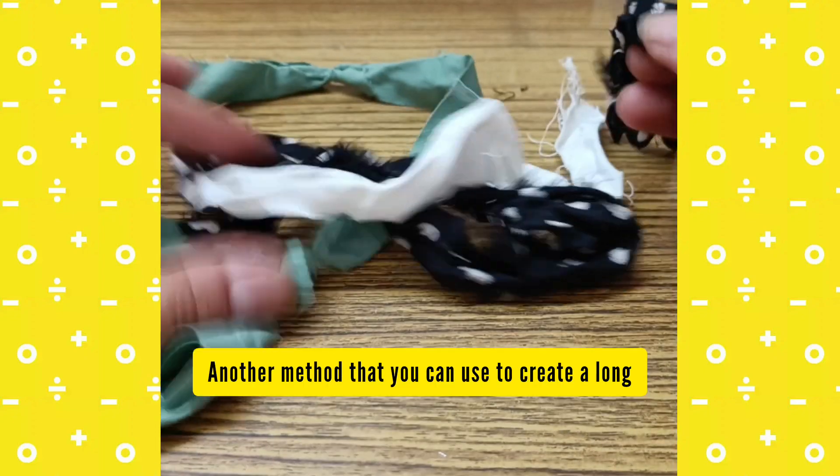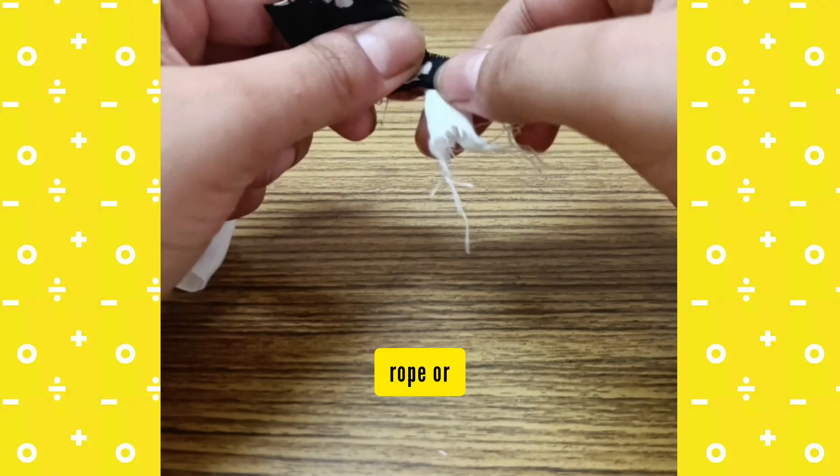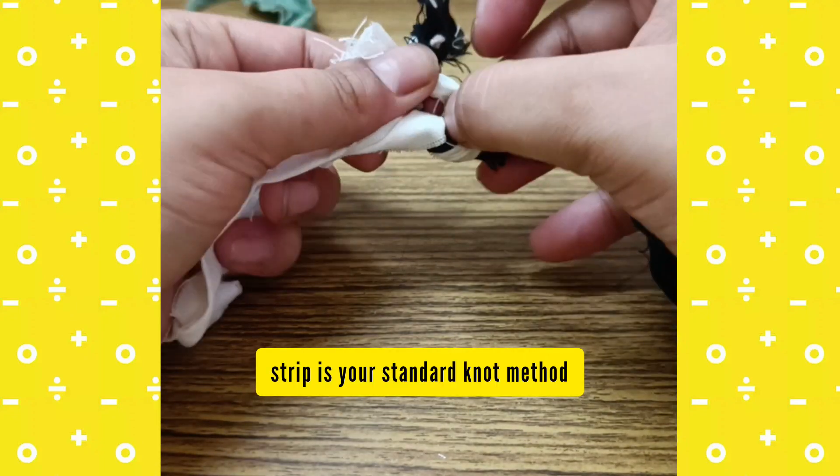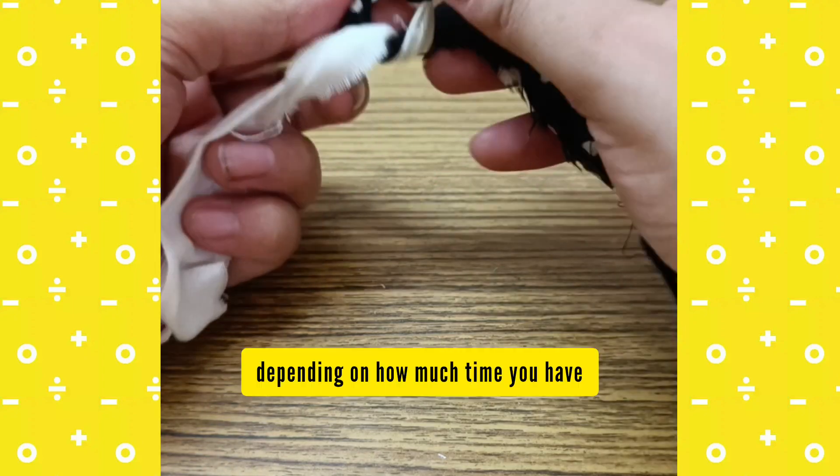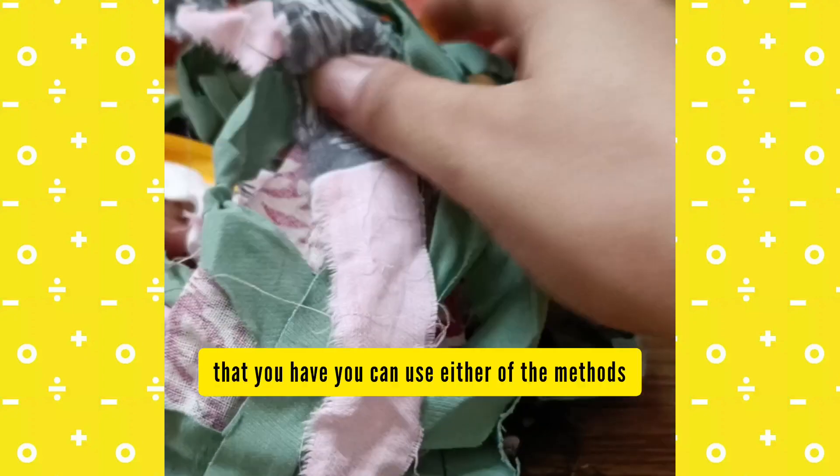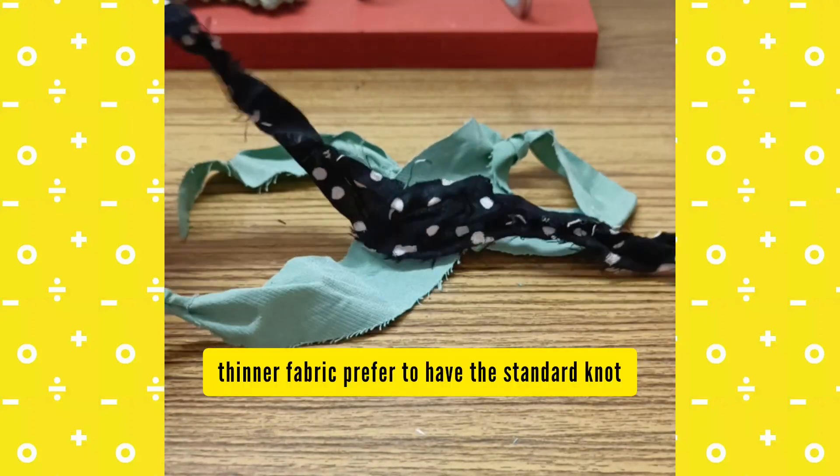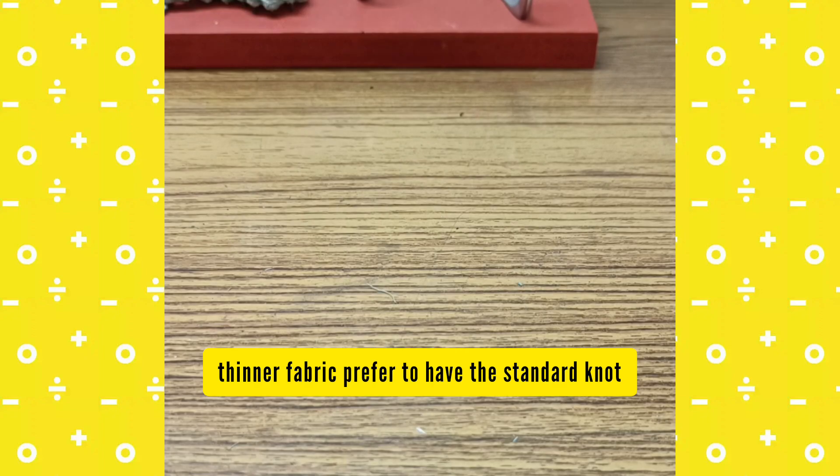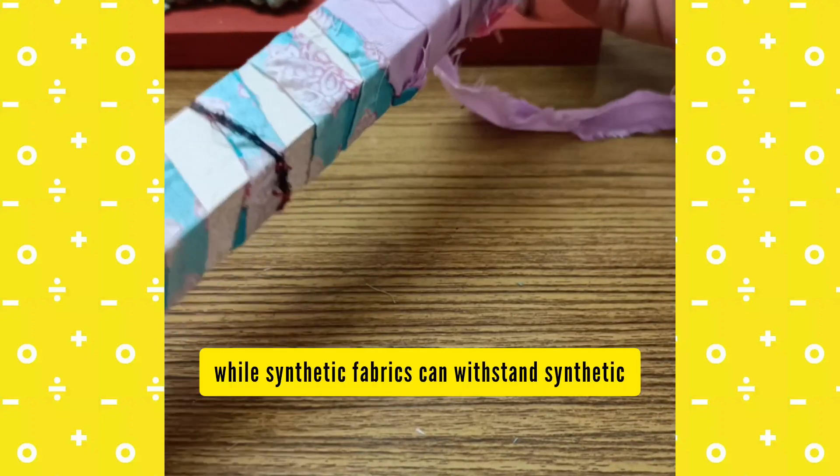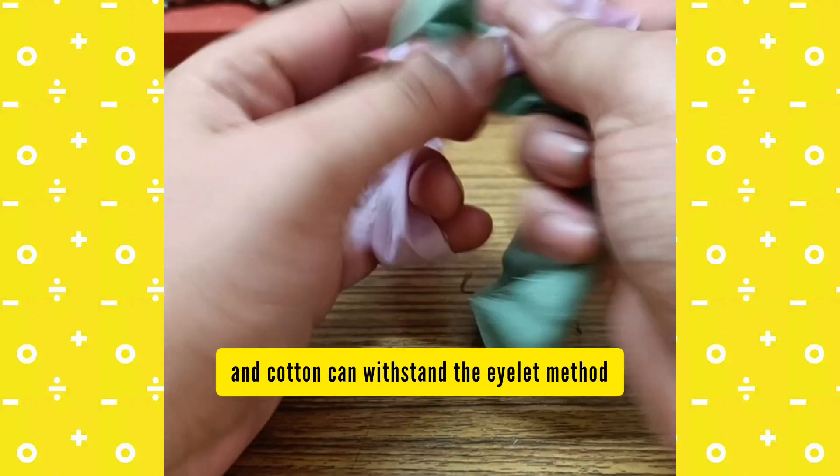Another method that you can use to create a long rope or strip is your standard knot method. Depending on how much time you have or the type of fabric that you have, you can use either method. Thinner fabrics prefer the standard knot, while synthetic fabrics can withstand either method.